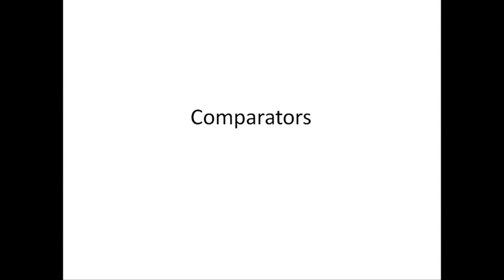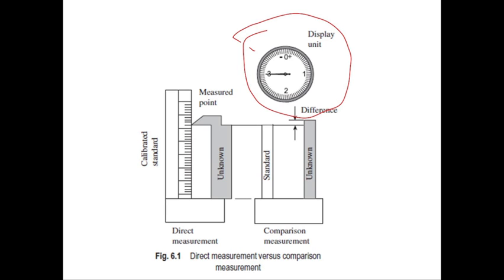Comparators are generally used for linear measurements, and the various comparators currently available basically differ in their methods of amplifying and recording the variations measured. We can see in this figure the difference between direct and comparison measurement. On the left side we have direct measurement, and on the right side we have comparison measurement. In direct measurement we have a measuring scale to measure the unknown quantity, whereas in comparison measurement we have a standard and an unknown quantity.